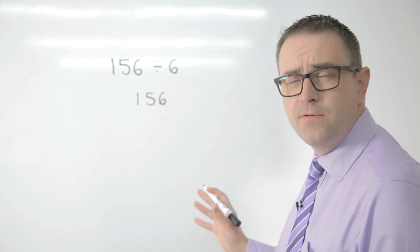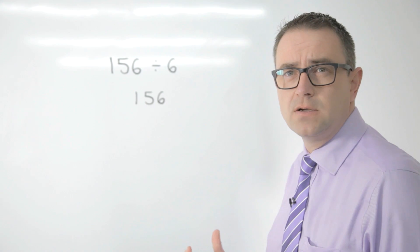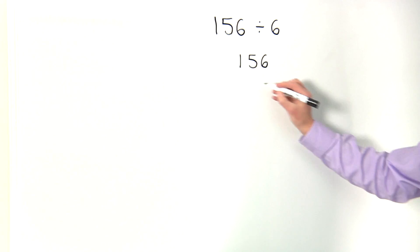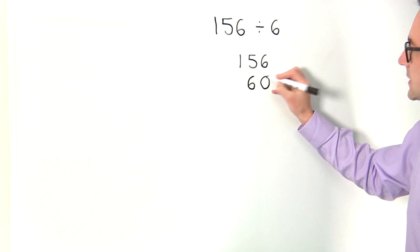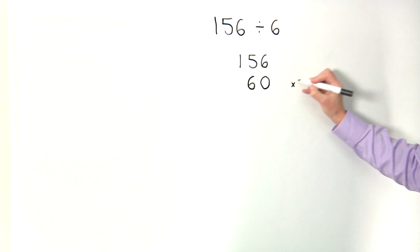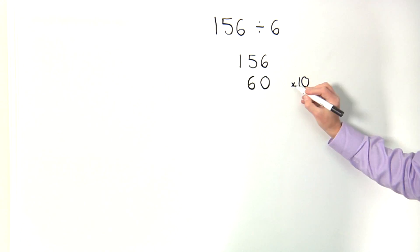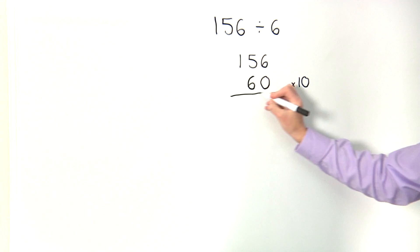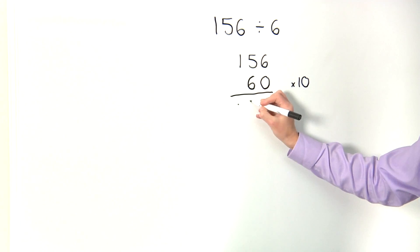So I'm looking for lots of 6. I know 10 lots of 6, I know that no problem at all. So I am going to record 10 lots of 6, and here so that I don't forget I'm making a note that that's 10 lots, 10 times 6. That now leaves me with 96.